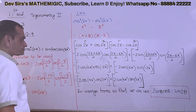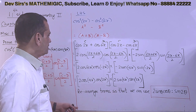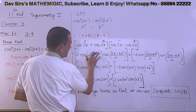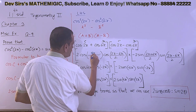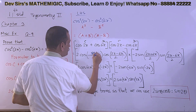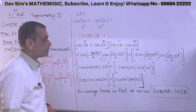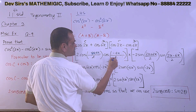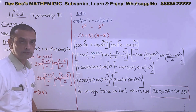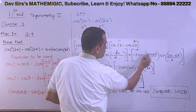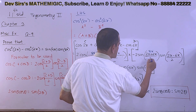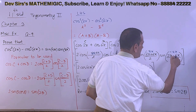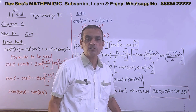Now simplifying: 2x plus 6x is 8x, and 8x upon 2 gives 4x. Then 2x minus 6x is minus 4x, and minus 4x upon 2 is minus 2x. The same applies to the second bracket: 2x plus 6x upon 2 gives 4x, and 2x minus 6x upon 2 gives minus 2x. Simple addition and subtraction.